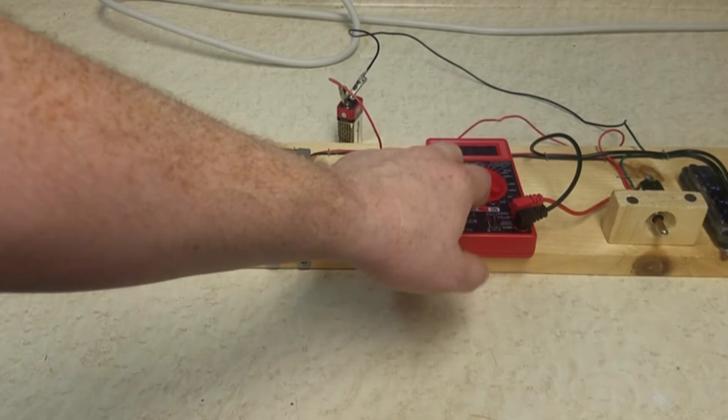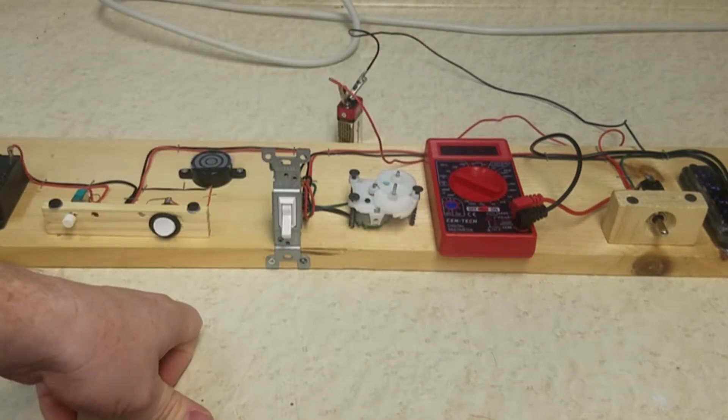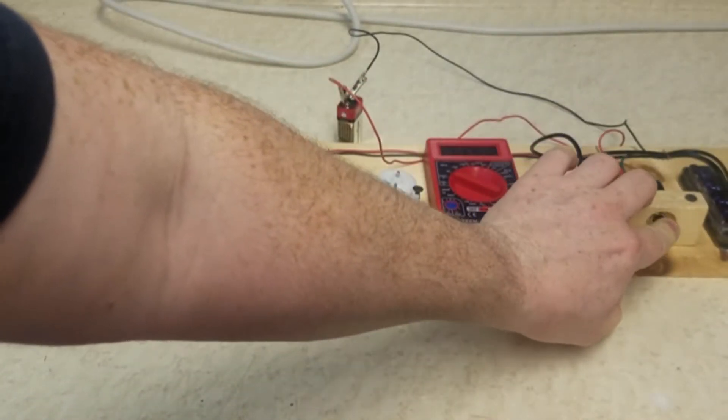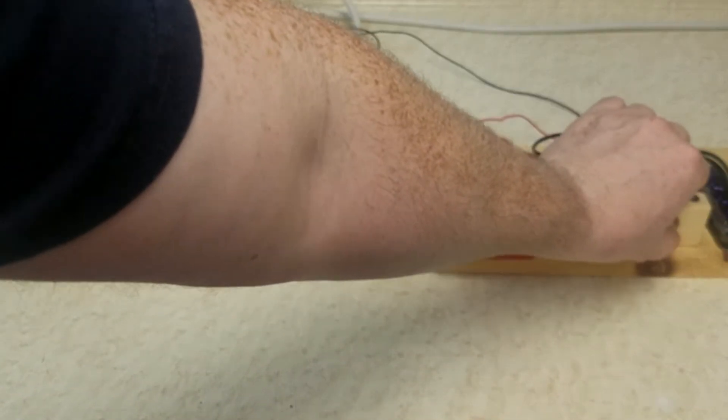There's a cheap multimeter so you can see what the voltage of the battery is. I've got a rocker here; one way it's turning this relay.